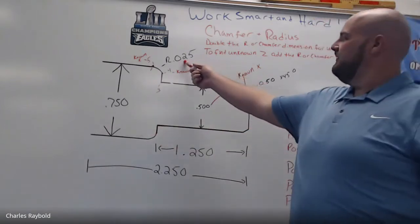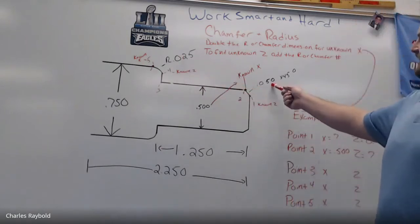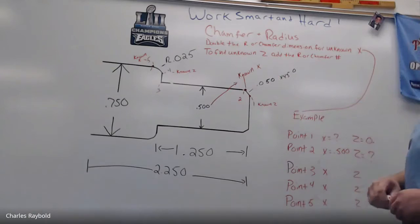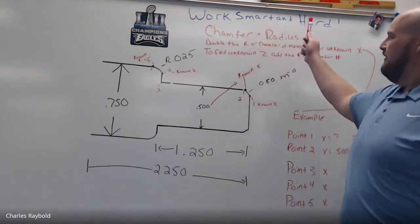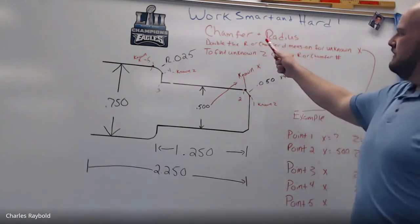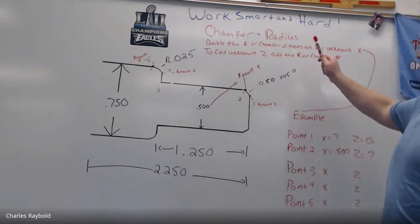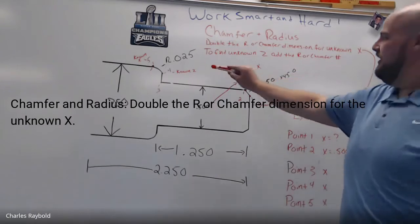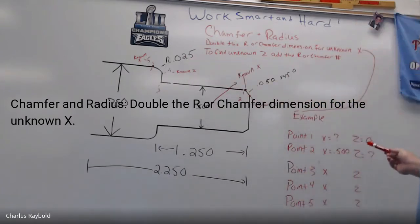It's got a twenty-five thousandths radius here and a fifty thousandths by forty-five degree chamfer here. For a chamfer and a radius, you have to double the R for the chamfer dimension — to find the unknown X.